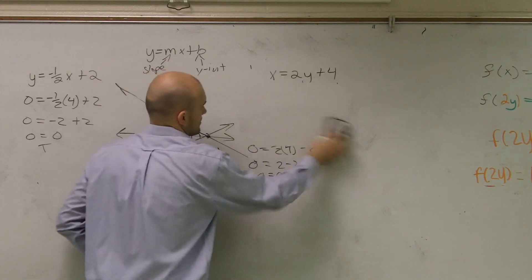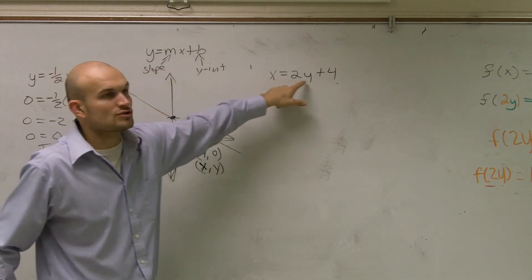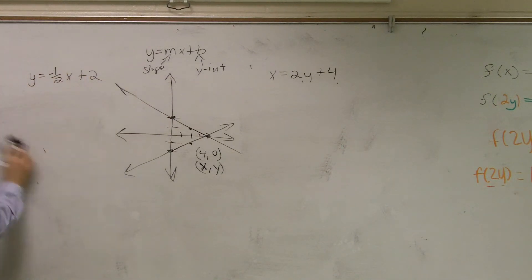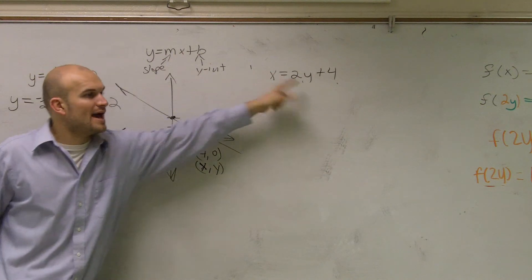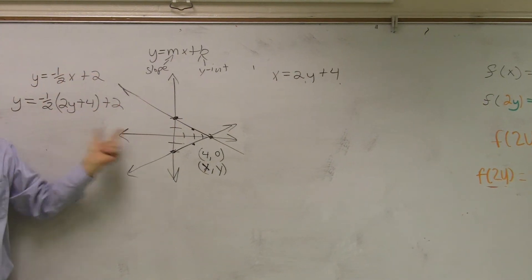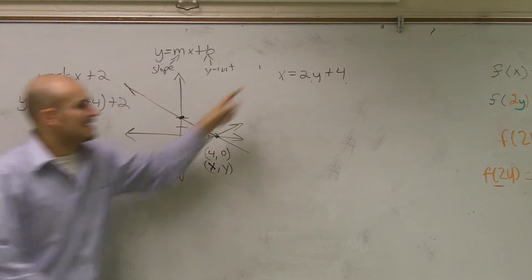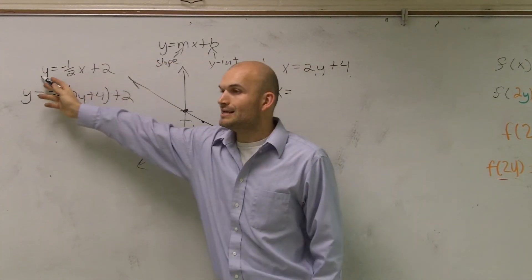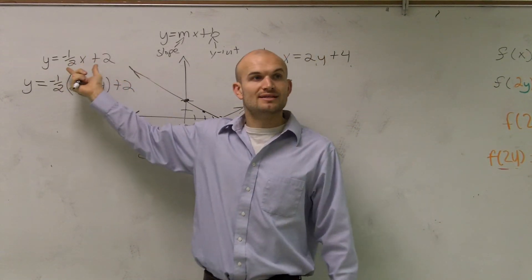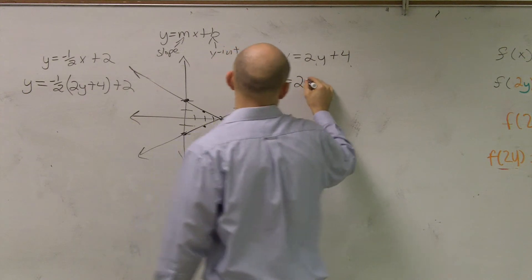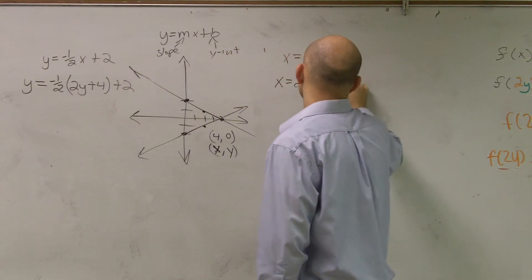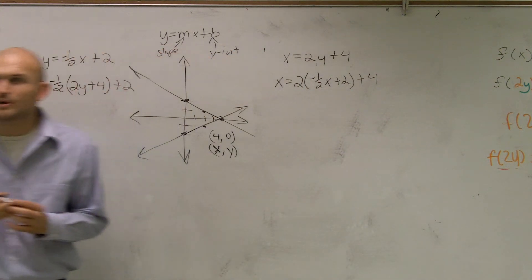So therefore, if I say the value of x equals 2y plus 4, instead of writing x over here, I can write 2y plus 4. Does everybody see what I did? I plugged in the value of x into this equation because they're exactly the same at this solution.